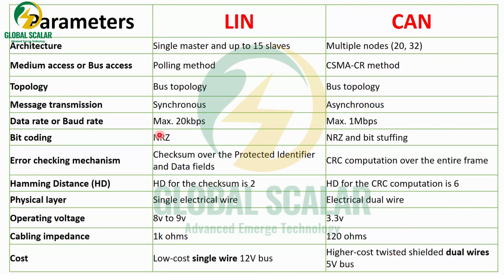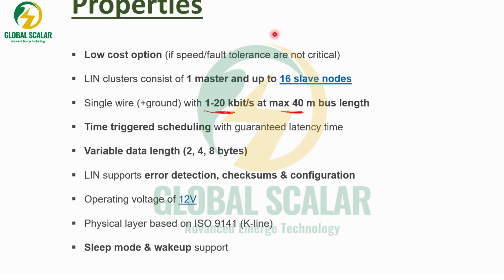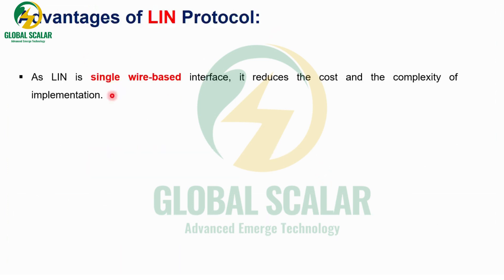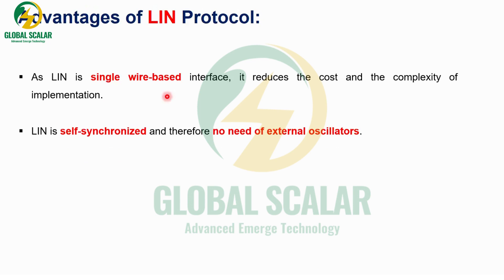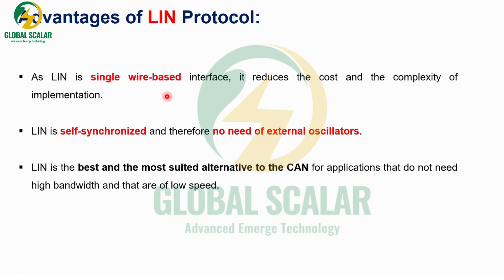Advantages of LIN: it is a single-wire interface, making it low cost and suitable for implementing in vehicles with reduced hardware complexity. It is a self-synchronized protocol, so no external clock or oscillator is required. LIN is the best and most suitable alternative to CAN for applications that do not require high bandwidth.